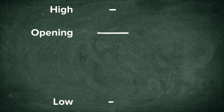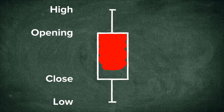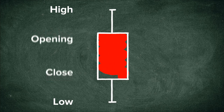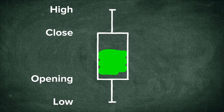Candlesticks are commonly formed by the opening, high, low, and closing prices over a user-defined timeframe. If the bar closes lower than the opening price, then a filled or red candlestick is drawn. If the closing price is above the opening price, then typically a green or hollow candlestick is displayed.